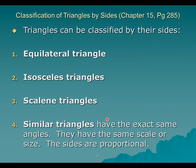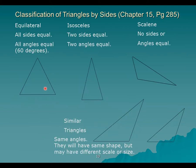These are the classifications by sides — equilateral, isosceles, and scalene triangles. In an equilateral triangle, all sides are equal and all angles are equal as well — each angle is 60 degrees, since 180 divided by 3 equals 60. In an isosceles triangle, two sides are equal and two angles are equal. In a scalene triangle, no sides and no angles are equal.